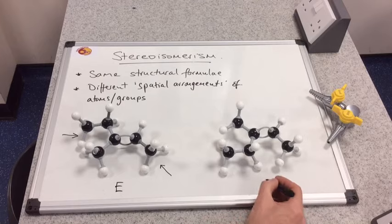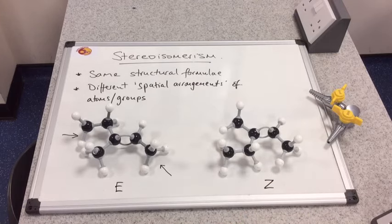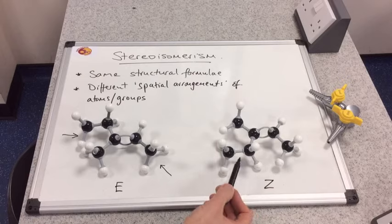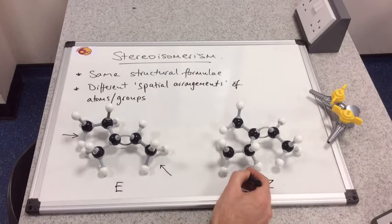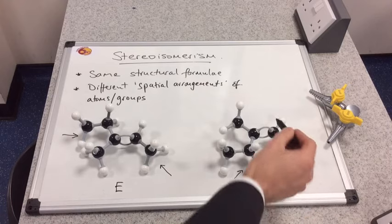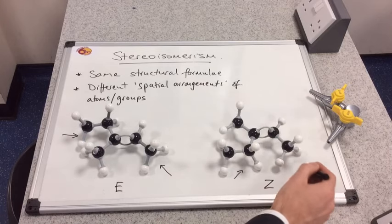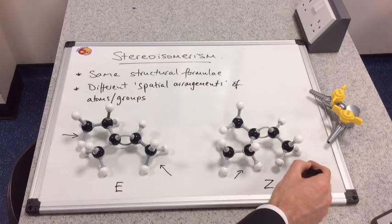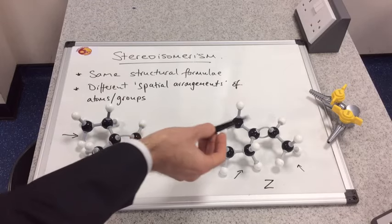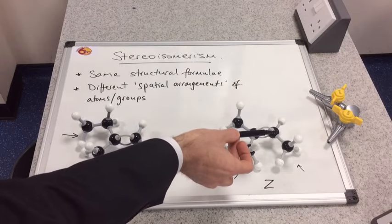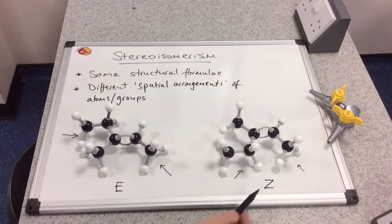Therefore, this other molecule must be the Z form — let's just check. Priority group: methyl versus ethyl, so it's the ethyl. Hydrogen versus methyl, so it's the methyl. These priority groups are on the same side of the double bond, therefore they are together on the same side — Zusammen, for together. So this is confirmed as the Z form.